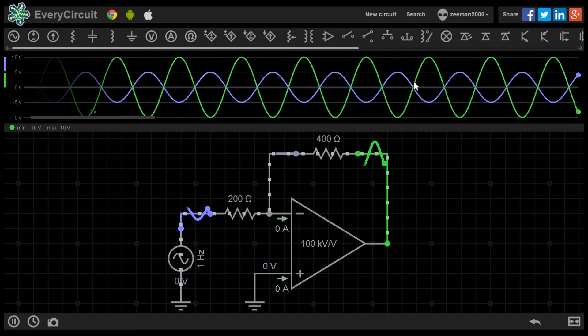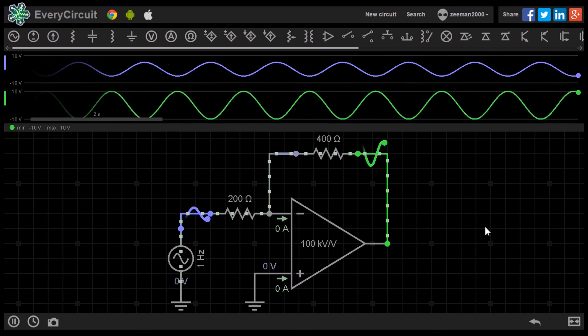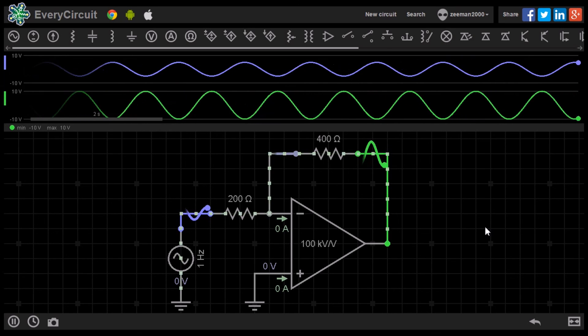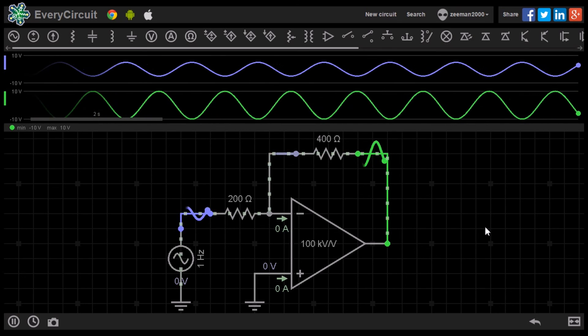Thanks to a new feature in every circuit we can look at the signals on separate channels, as you would with a proper oscilloscope. Simply drag one of the input signals down to do this.